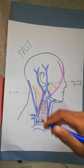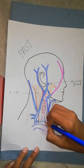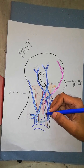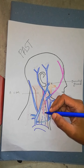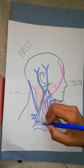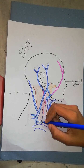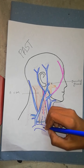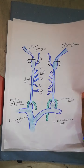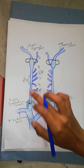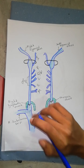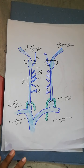Finally, the internal jugular vein ends by joining the subclavian vein behind the medial end of the clavicle to form the brachiocephalic vein. You can better see this in the picture — here is the brachiocephalic vein, the internal jugular vein, and the subclavian vein.